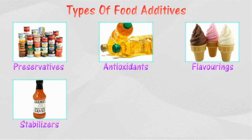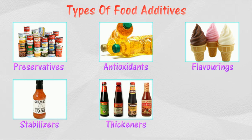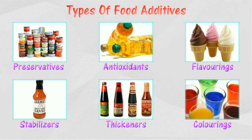Stabilizers are chemicals that are used to mix two liquids that usually do not mix together. Thickening agents are added into food to alter the texture of food. Coloring agents are added into food to make it look more attractive.